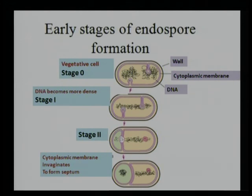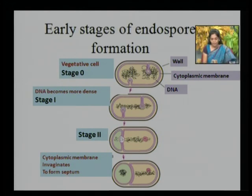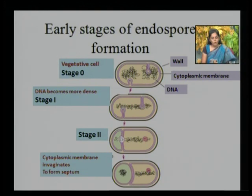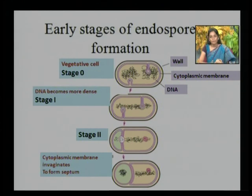In stage 2, unusual asymmetric cell division occurs. This asymmetric cell division leads to the cytoplasmic invagination of the spore at one pole, which separates the cytoplasm of the smaller cell from the rest of its cell components, which is the mother cell.